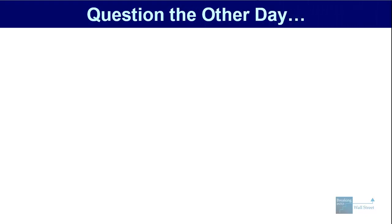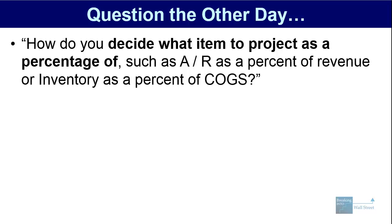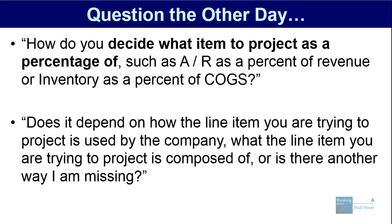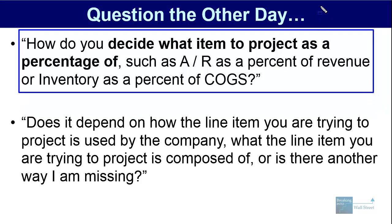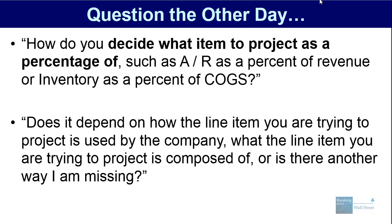Hello and welcome to our next free YouTube tutorial. This time around I'm going to go back to a question that came in the other day, show you what the question is, and then show you how you can easily answer this when it comes to your own financial models and valuations. The question is: how do you decide what item to project as a percentage of something — such as accounts receivable as a percent of revenue, or inventory as a percent of COGS? The way this question is phrased may be a little bit unclear, so I'm going to rewrite it and show you what the student's intended meaning actually is.